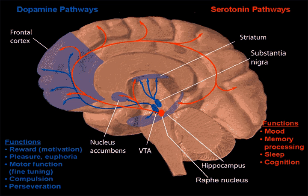Once the action potential reaches the axon terminal, it will cause an influx of calcium ions into the cell. The calcium ions will then cause vesicles — small packets filled with neurotransmitters — to bind to the cell membrane and release their contents into the synapse. This cell is known as the presynaptic neuron, and the cell that interacts with the neurotransmitters released is known as the postsynaptic neuron.